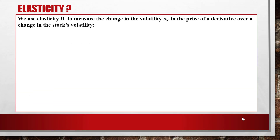Now let's talk about elasticity. We use elasticity omega to measure the change in volatility of V — the price of the derivative — over a change in the stock volatility. We have the relation: sigma_V equals omega times sigma, where sigma is the underlying stock volatility, sigma_V is the volatility of the derivative price, and omega is measured by S times Delta over V — where S is the current stock price, Delta is the partial derivative of V with respect to S, and V is the price of the derivative.